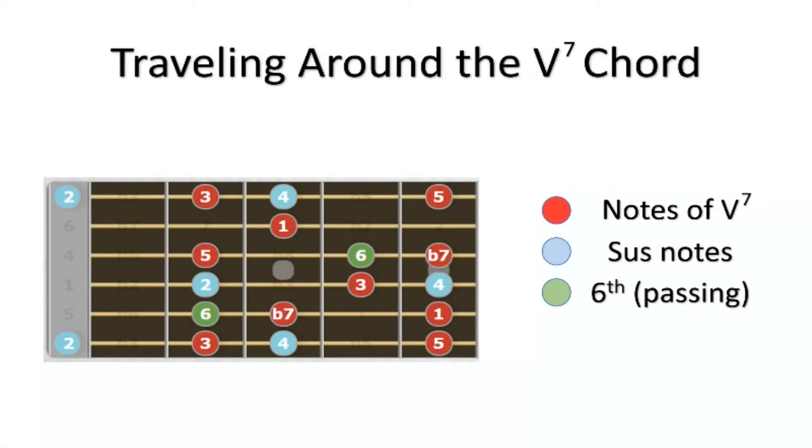The green notes are the 6th chord member or 13th when played up an octave. This note is a good passing tone between the flat 7th and the 5th.